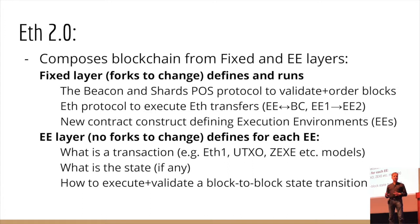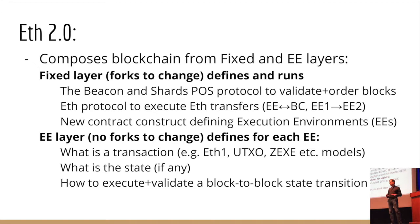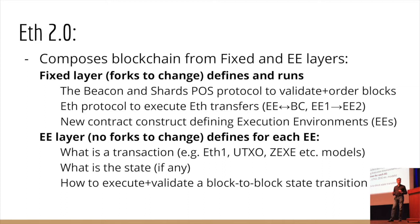Ethereum 2 does not define what a transaction is. In fact, in Ethereum 2, a UTXO-style Bitcoin transaction can be completely valid — you just have to define an execution environment that can do it. You can define a Zexi environment that operates pretty much at an Ethereum 1 type level. You can define an identity layer. The EE layer, the flexible layer, also defines what is state. So it is possible in Ethereum 2 to actually have execution environments where there's no state at all being held. It's extremely different than Ethereum 1, where it was all very prescriptive about how to do it.